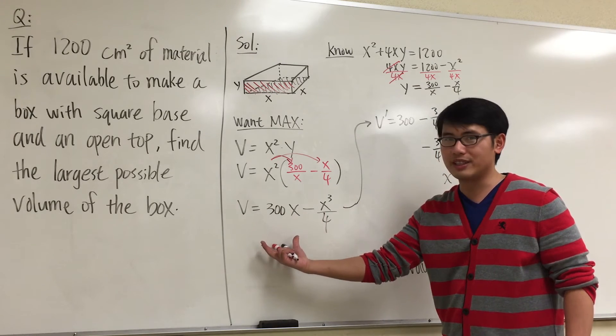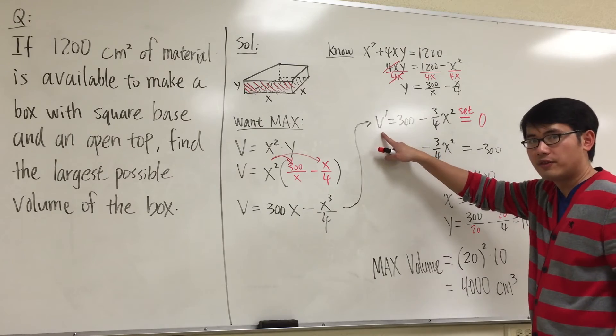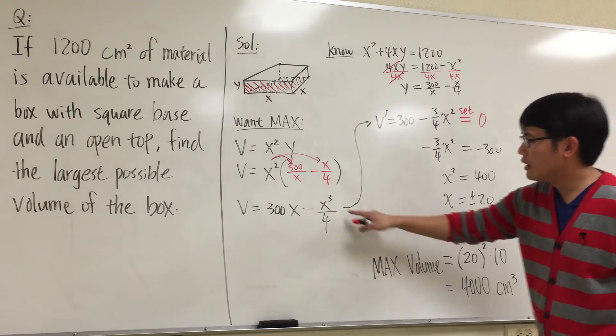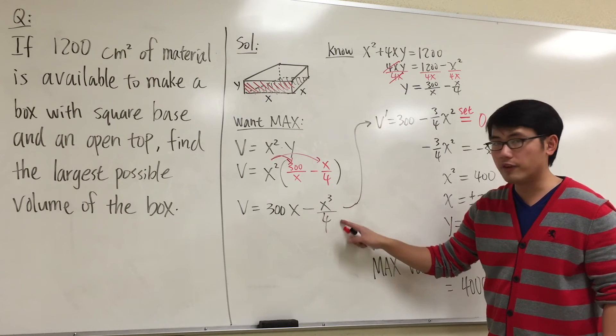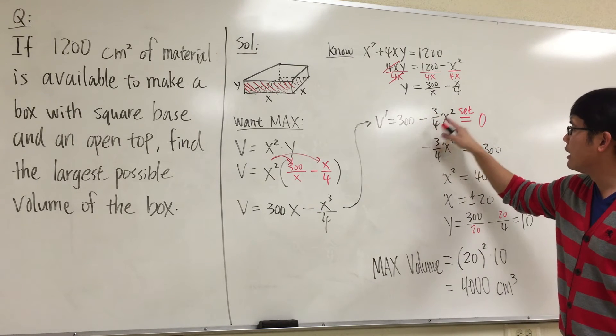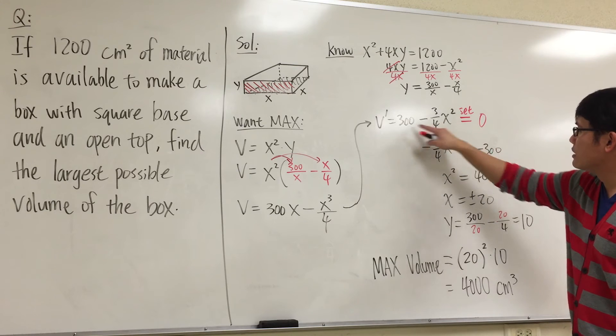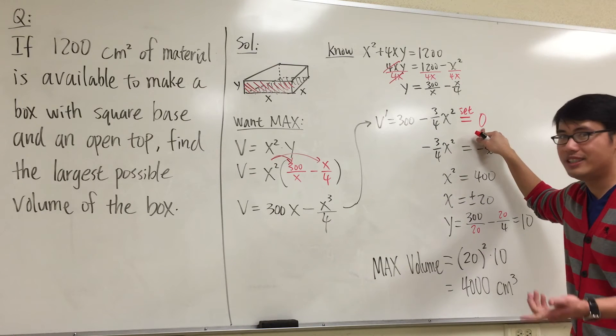This is much easier to take the derivative with. And we'll do that. So V' for the derivative for the volume. Derivative of 300x gives us 300. And derivative of -x³/4, bring the 3 to the front, so we have 3/4, and subtract 1, so we have x². And we set this derivative equal to zero to find the critical numbers.